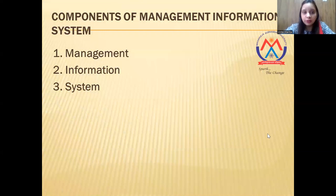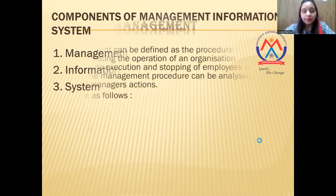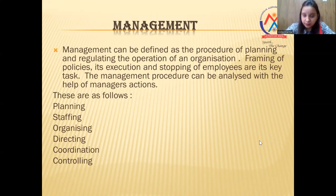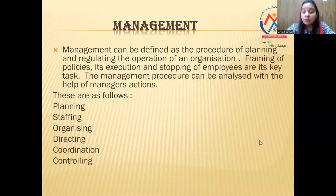Next is the component of the management information system: management, information, and system. These are three words used to prepare a complete system. First, management is like a process — a procedure of planning and regulating the operations of an organization. Wherever management is present, the organization or institute will run in a good manner. Framing policies, executions, and staffing of employees are the basic tasks. The management procedure can be analyzed with the help of the manager's actions: planning, staffing, organizing, directing, coordination, and controlling.